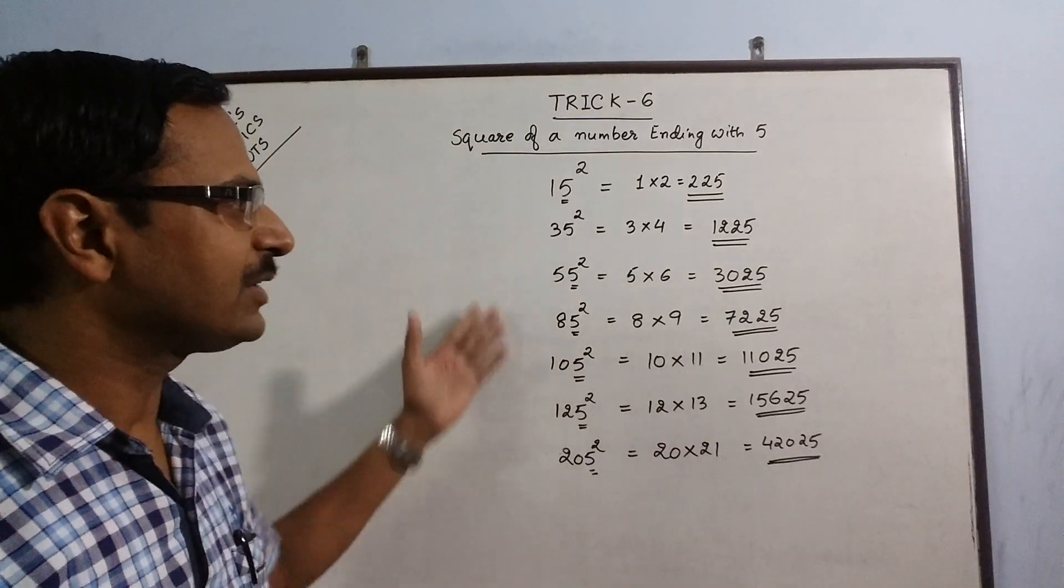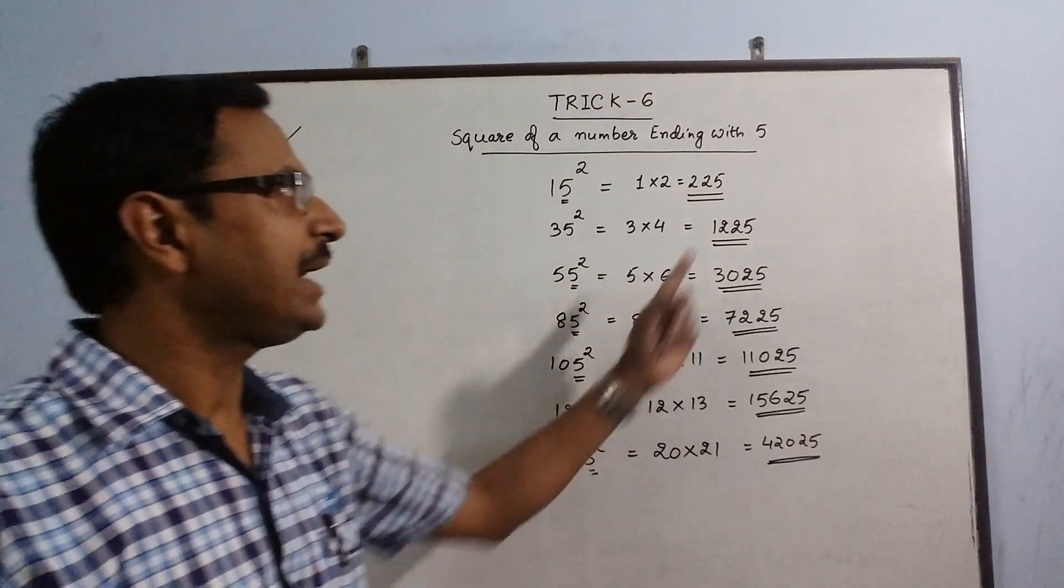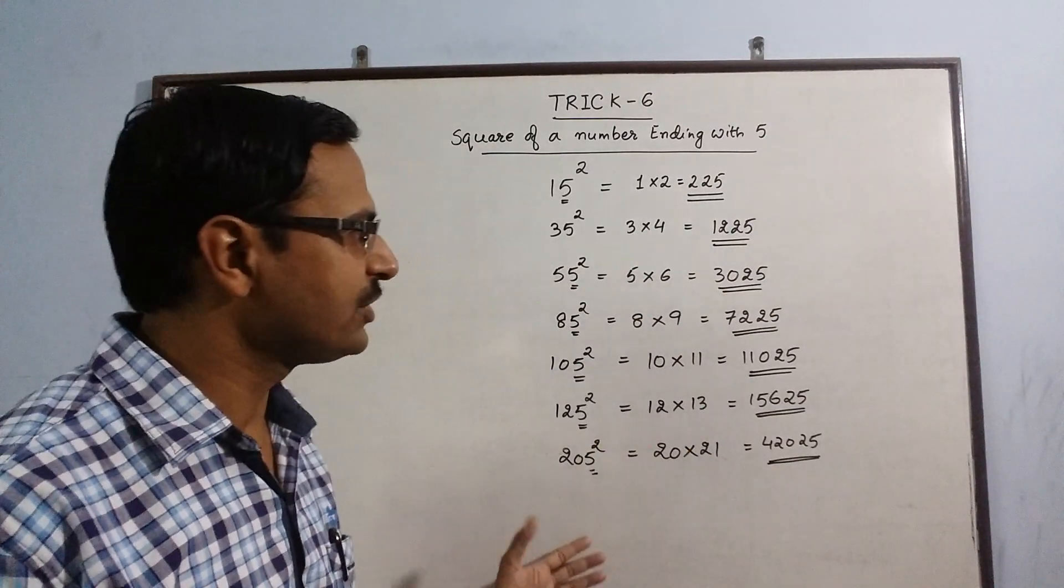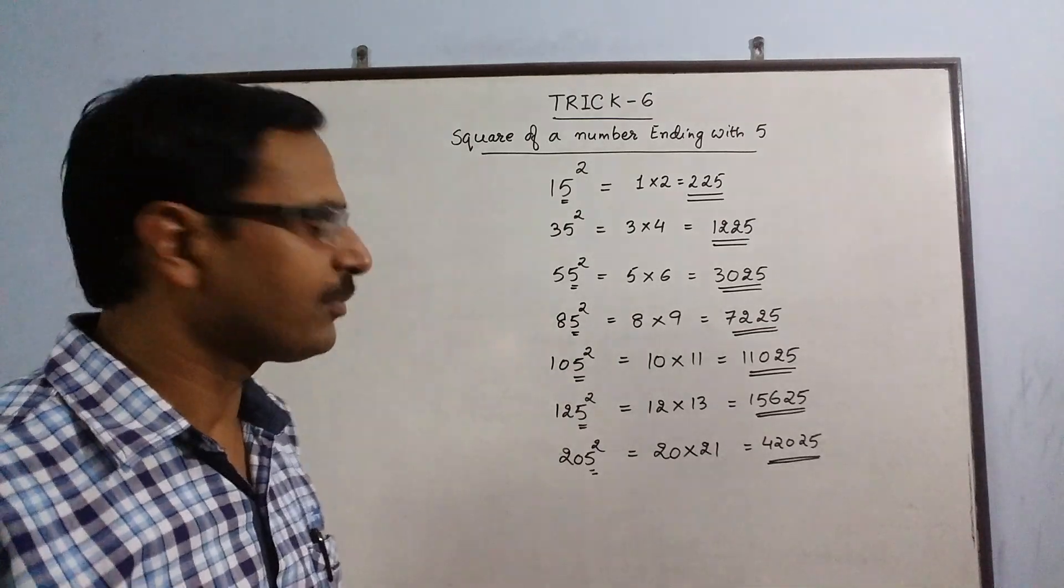So you can see this method of squaring the numbers which are ending with 5 is far more efficient and quicker than the traditional method of multiplication.